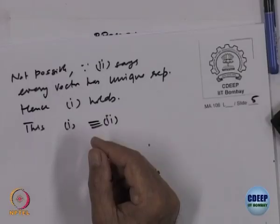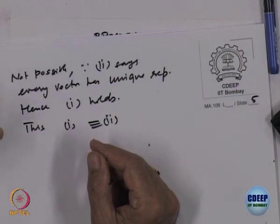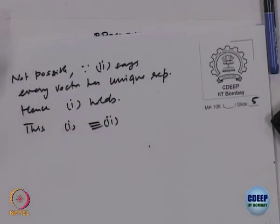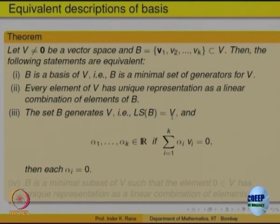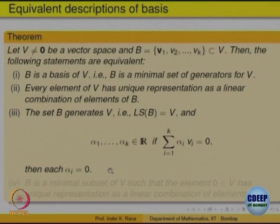We want to prove another one. Namely, saying that every element has got a unique representation is equivalent to saying that the set B generates — that is, the linear span is B — and if a linear combination is 0, then all the scalars must be 0.